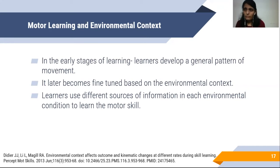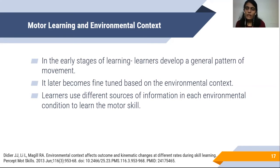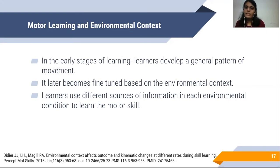The environmental context has an effect on both performance outcome and the movements used during skill acquisition. Hence, involvement of the environment in learning increases the performance outcome. Initially, when we begin learning, we can keep the environmental complexity at a lower level. As time progresses, we can systematically increase the complexity so that we can have better results and learning.